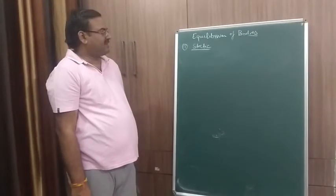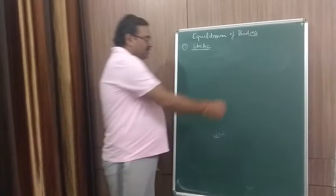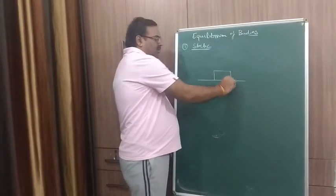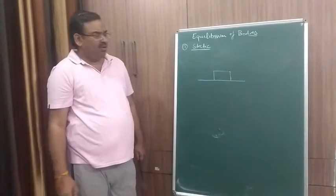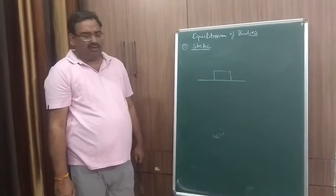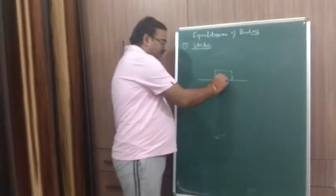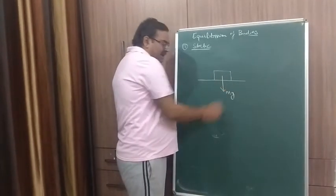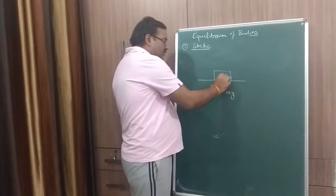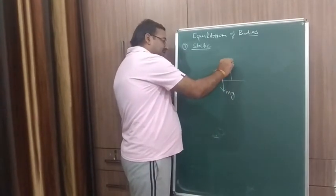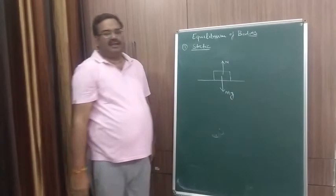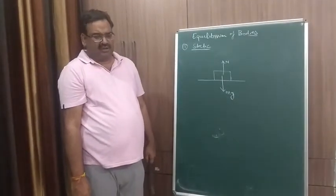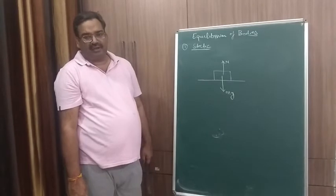For this example, we will start with static equilibrium. Suppose a book is being placed over a table. I am giving you an example. What are the forces acting on the book? One, the weight that is acting in the normal direction, that is Mg, and an equal and opposite reactionary force that is acting in the upward direction. That is why we find that the book keep on lying over the table. So it is at rest. This is an example of static equilibrium.